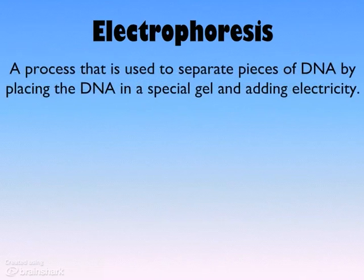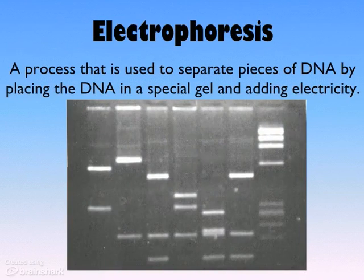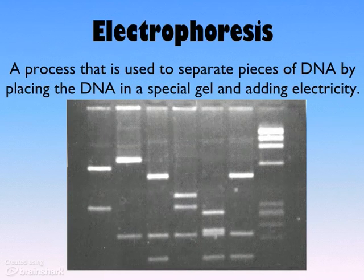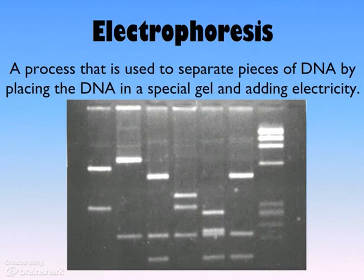The last separation technique is pretty involved — it's called electrophoresis. Electrophoresis is most often used to separate a mixture of different sized pieces of DNA by putting the mixture of DNA fragments in a special gel and then adding electricity. It moves through much the same way as paper chromatography, except instead of using a solvent moving through paper, we're using electricity to force the molecules to move through a medium.